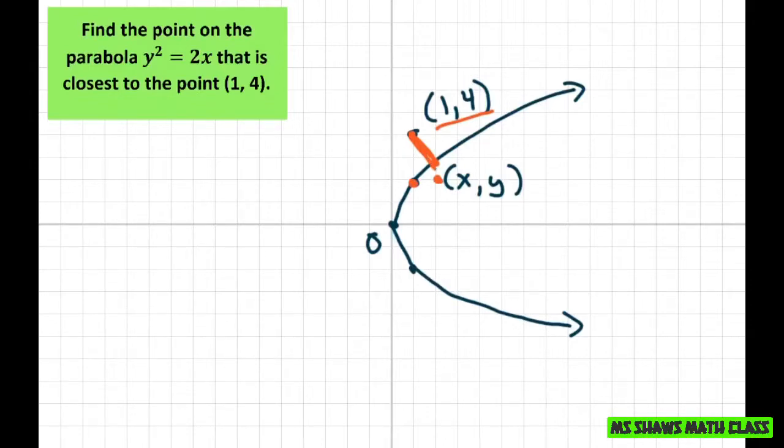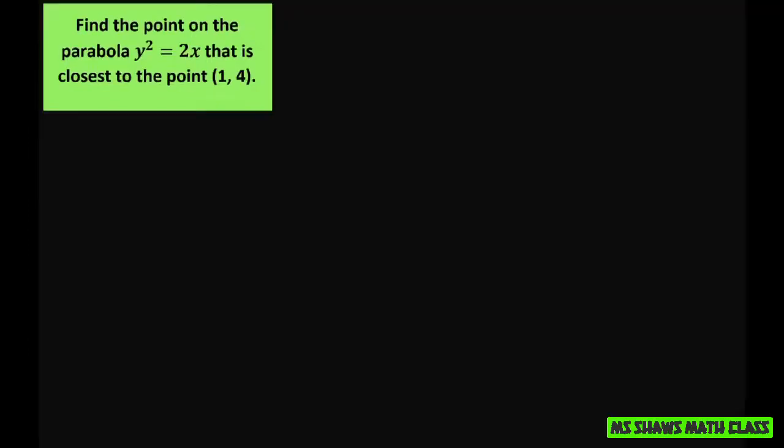So clearly we're going to use the distance formula. And what we want to do is find the distance between the point 1 comma 4 and I'm going to call this point xy and xy. So you use the distance formula. So that's going to be the distance equals square root of x minus 1 squared plus y minus 4 squared.